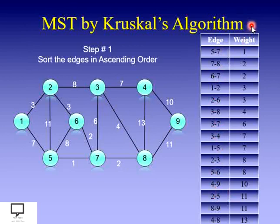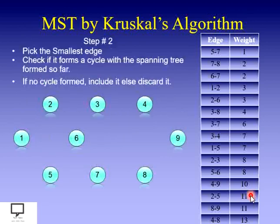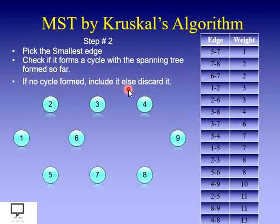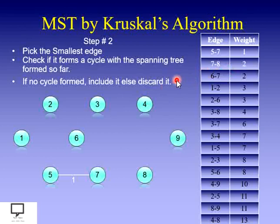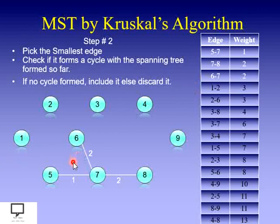I have sorted all edges with their weights in ascending order in the table. Now I pick the smallest edge first: edge 5–7 with weight 1. It is not forming any cycle, so I include it. Next edge is 7–8 with weight 2 — not forming any cycle, include it. Next edge is 6–7 with weight 2 — not forming any cycle, include it.